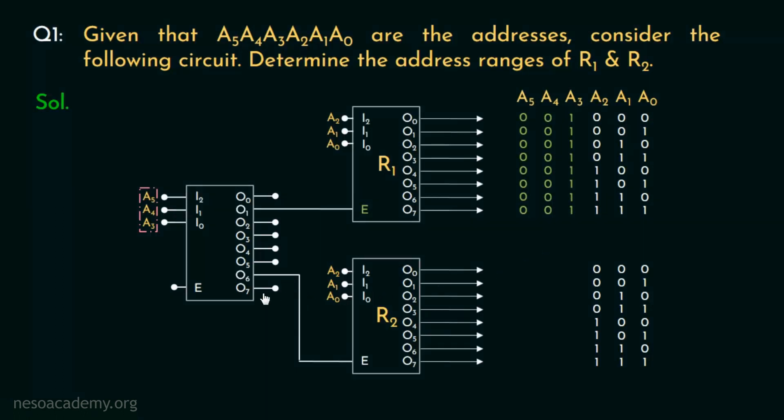On the other hand, activating O6 enables R2. Therefore, for R2, the sequence represented by A5, A4 and A3 will be 110, that is 6.